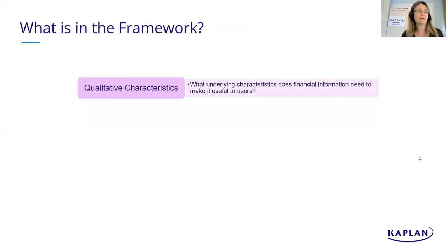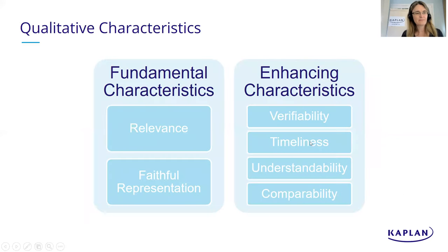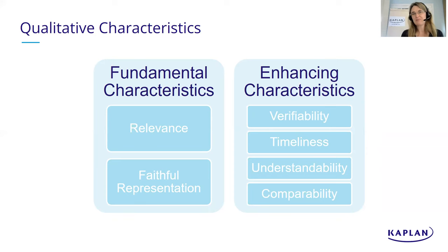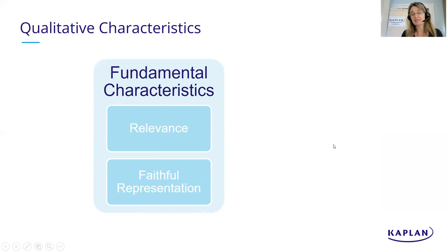Moving on to the qualitative characteristics. If users are looking at financial information to make economic decisions, what characteristics should that information have to be useful? There are two types: fundamental characteristics - relevance and faithful representation - and enhancing characteristics: verifiability, timeliness, understandability, and comparability. We'll look at each category in order, starting with the fundamental characteristics of relevance and faithful representation.